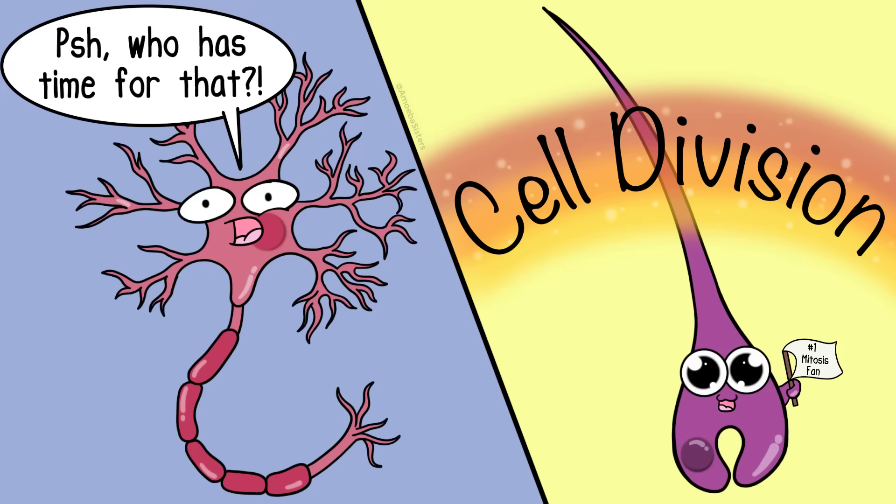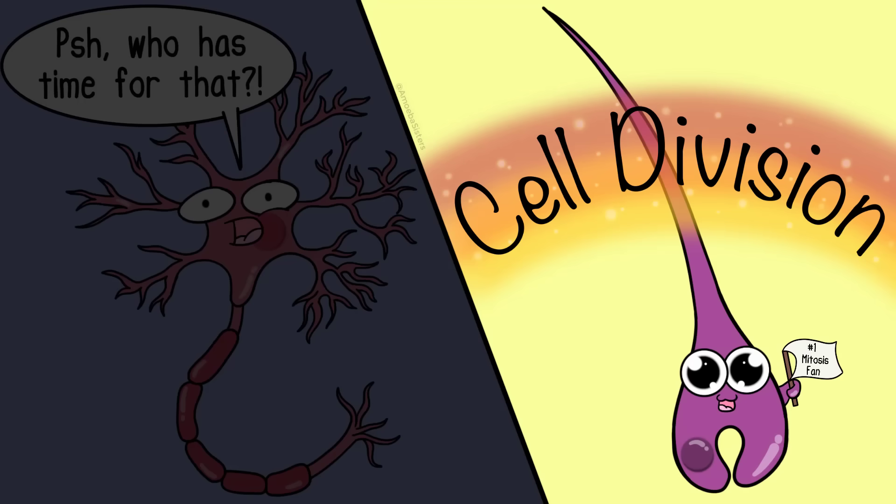Now depending on what kind of cell, it might do mitosis more or less often. For example, your hair follicle cells do mitosis frequently, which is why your hair can grow at the rate that it does.